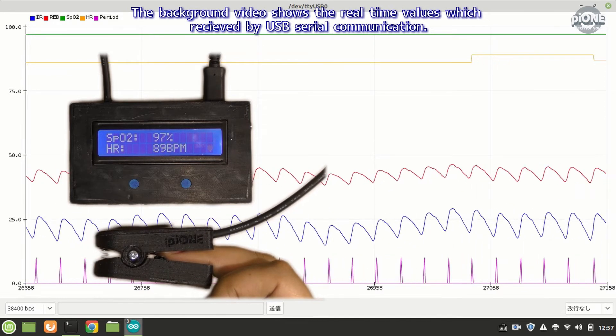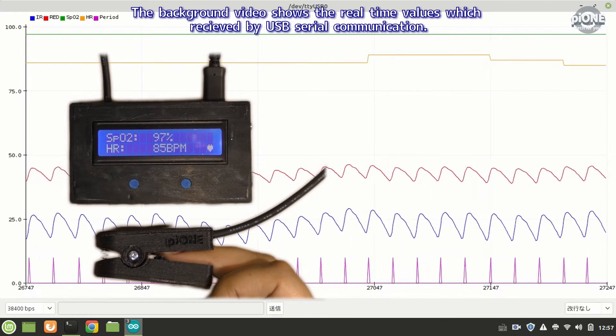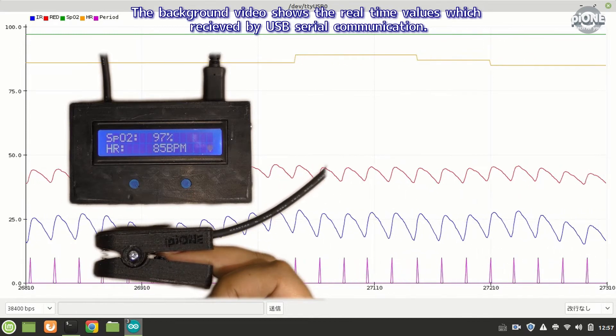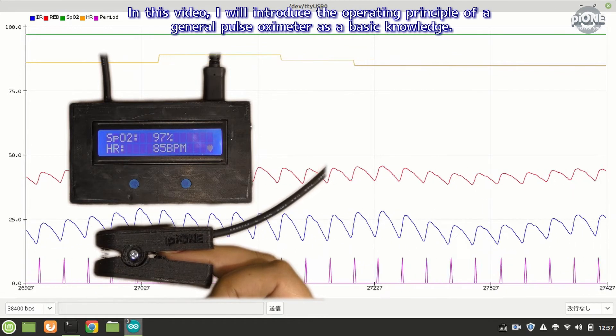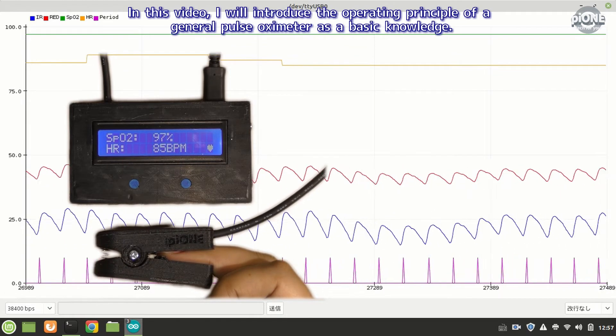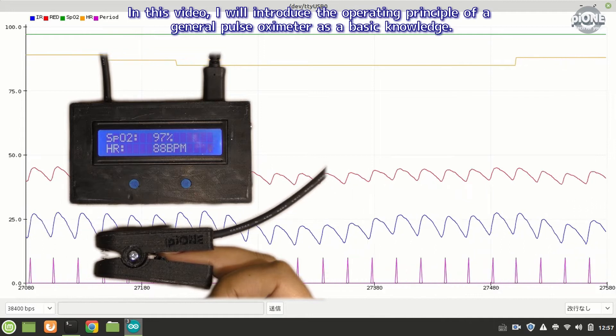The background video shows the real-time values which are received by USB serial communication. In this video, I will introduce the operating principle of a general pulse oximeter as a basic knowledge.